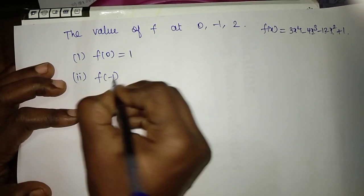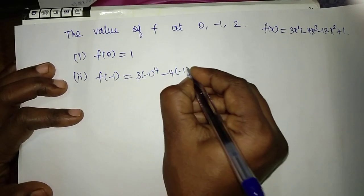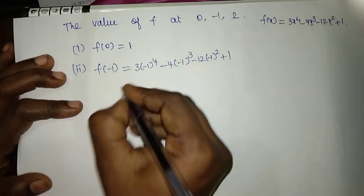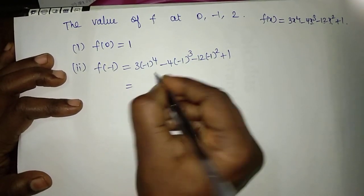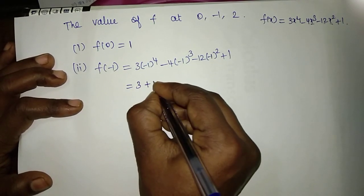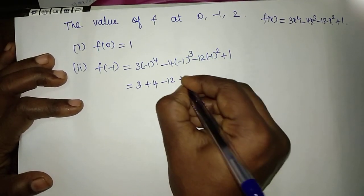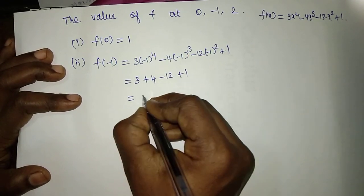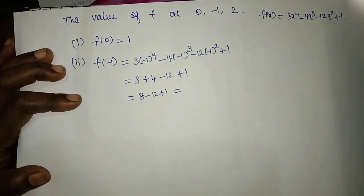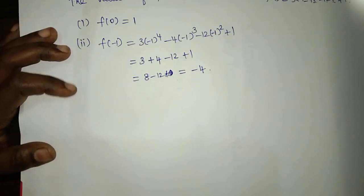Next, F of minus 1: 3 times (minus 1) to the power 4, minus 4 times (minus 1) cubed, minus 12 times (minus 1) squared, plus 1. Since (minus 1) to the power 4 is plus 1, we get 3, minus 4 times (minus 1) gives plus 4, minus 12 times 1 gives minus 12, plus 1. So 3 plus 4 minus 12 plus 1 equals minus 4.